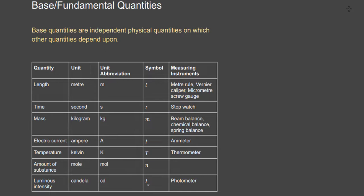The first base quantity is length — it's about distance, how far point A is from point B. Your height and the length of your room are forms of length. The unit for length is the meter, which is the SI unit. We also have feet and inches, but the SI unit is the meter. SI stands for International System.